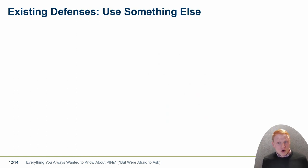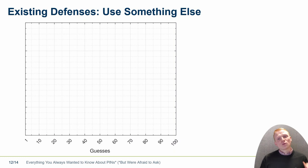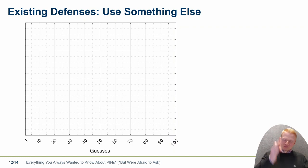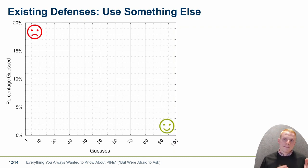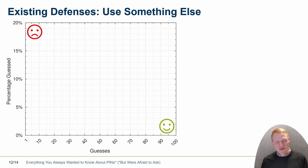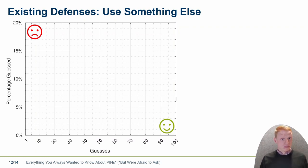Let's say we don't want to go with pins — we want to go with another authenticator, for example pattern or password. What can we do here? We look at the number of guesses the attacker can make on the x-axis, and on the y-axis we have the success rate of the attacker. We want to end up in the lower right — many guesses but not a high success rate. Where we don't want to end up is the upper left, where the attacker makes just a few guesses and is very successful.